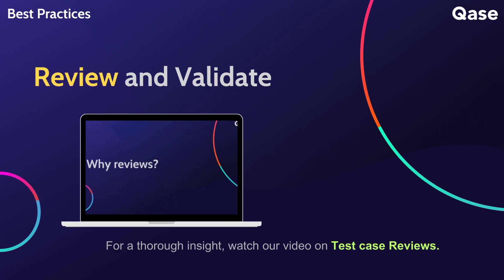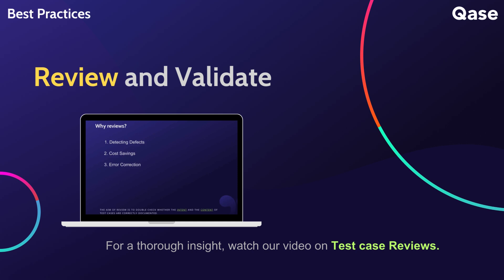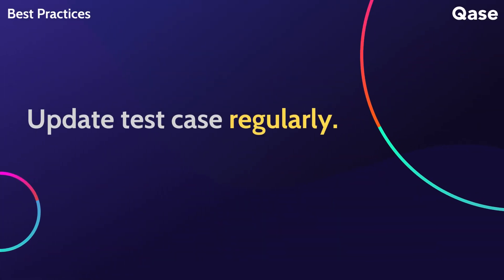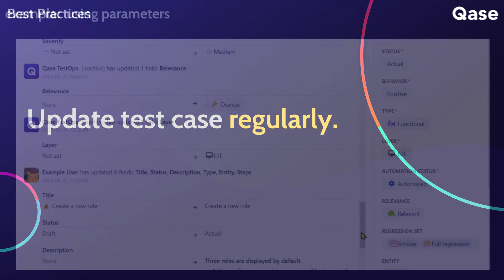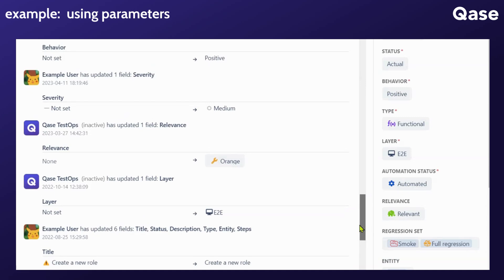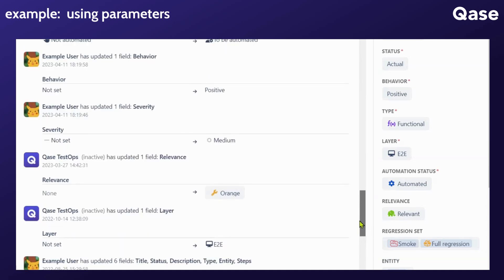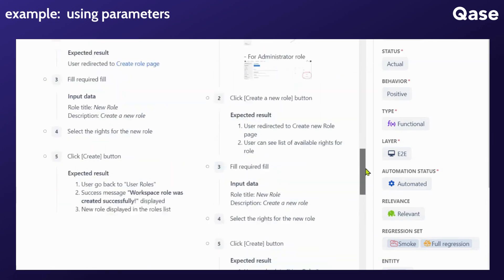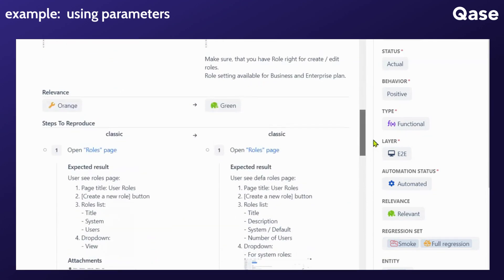Have your test cases reviewed by peers to ensure accuracy and completeness. Validation is crucial to catch any potential issues before executing the tests. Test cases should be dynamic and regularly updated to adapt to changes in software requirements. If a test case identifies a defect, log it.